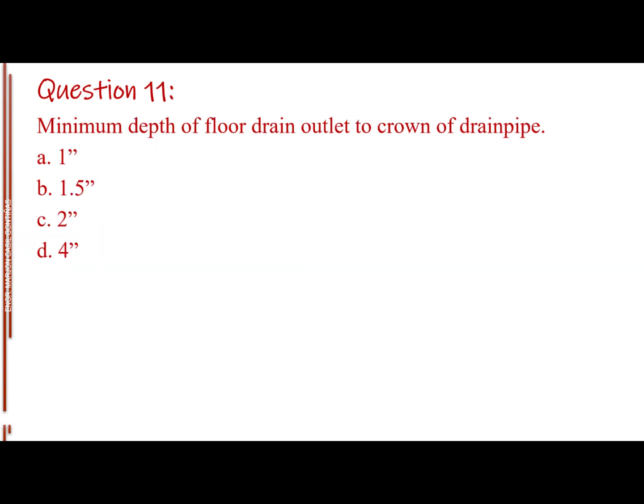Question number 11. Minimum depth of floor drain outlet to crown of drain pipe. Letter A, 1 inch. Letter B, 1.5 inches. Letter C, 2 inches. Letter D, 4 inches. The answer is Letter C, 2 inches.